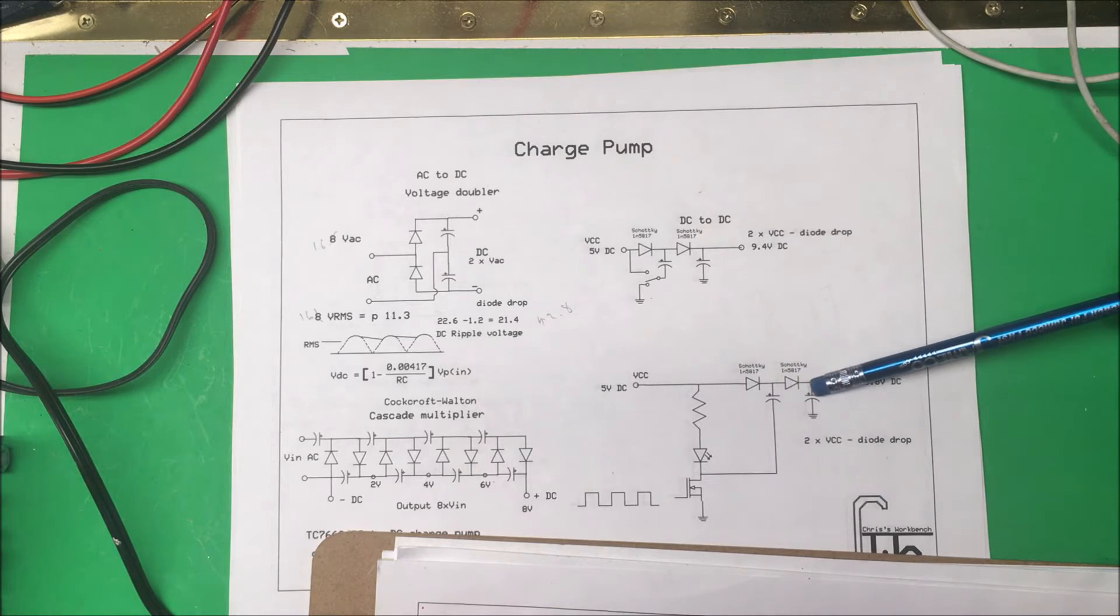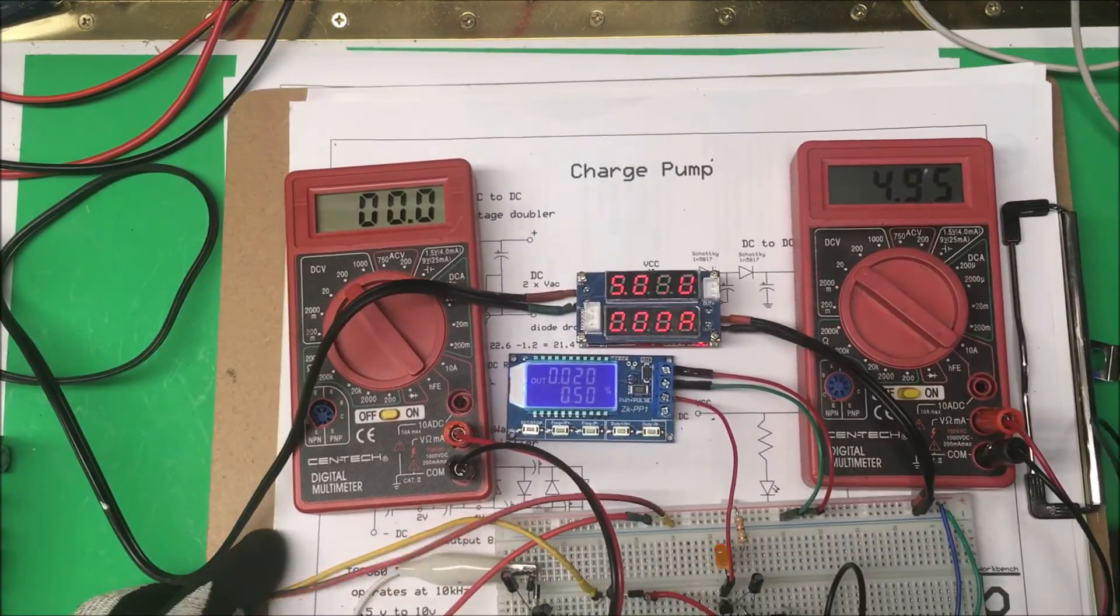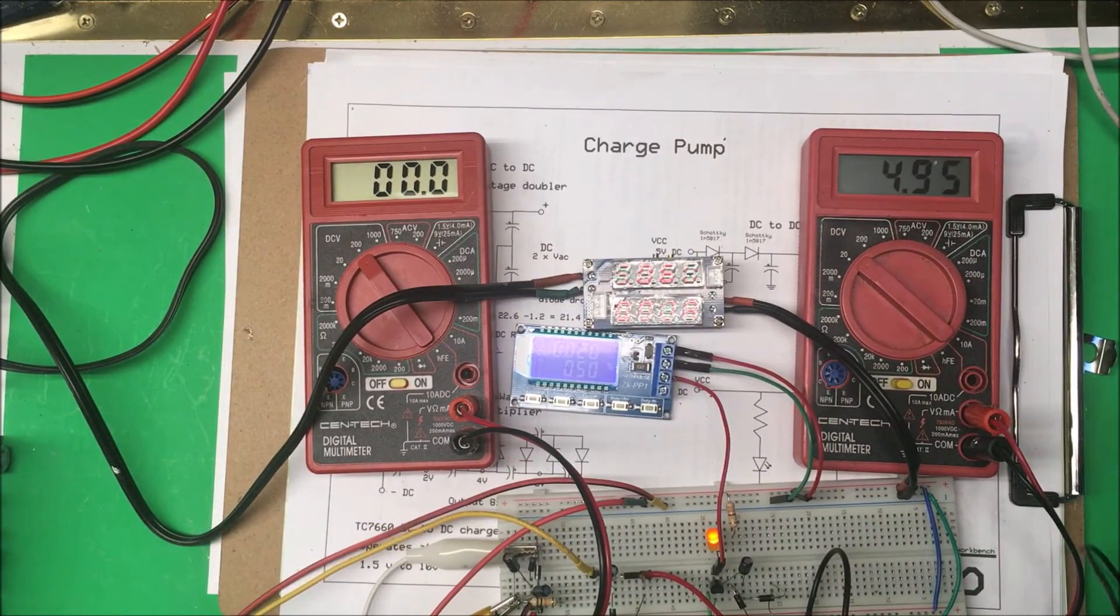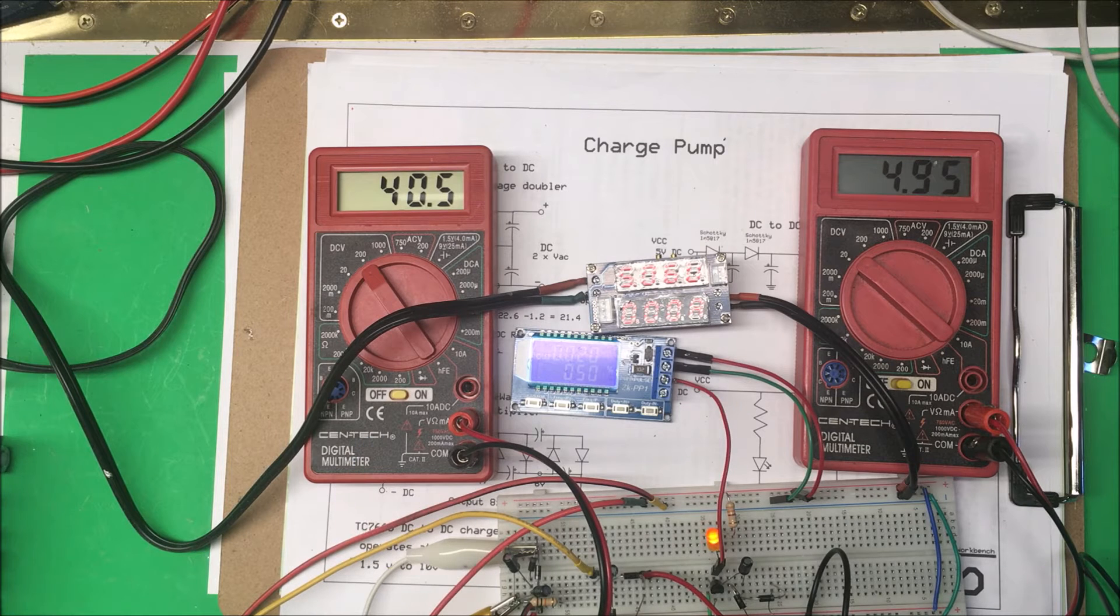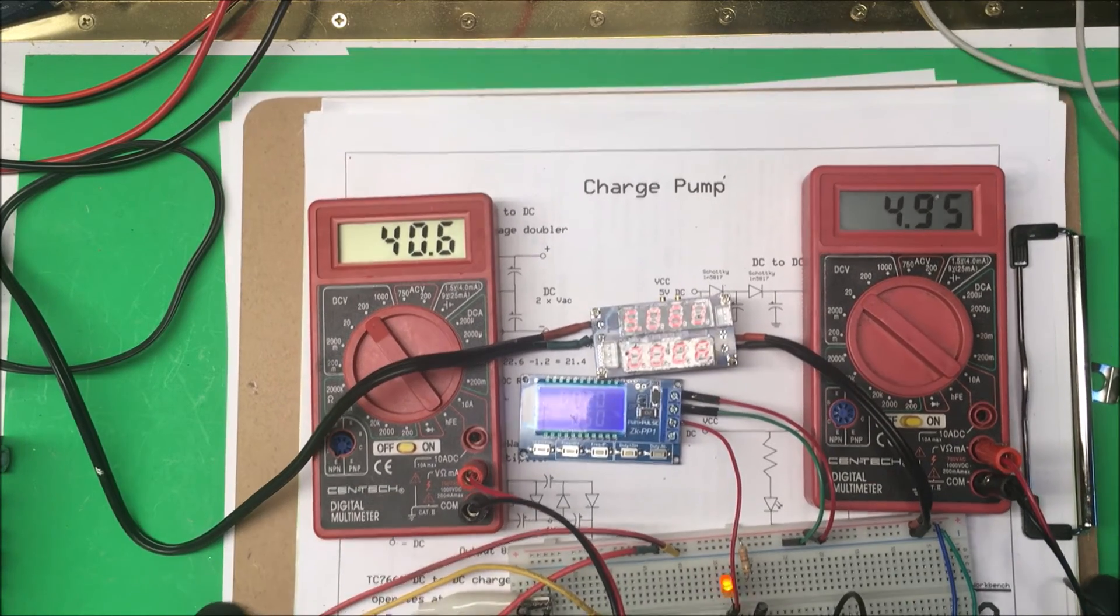Here it is. Now I've got the, let's see what our AC one or DC voltage is: 40 volts, 40.5 volts out of that one. I'm putting in 16 volts RMS value in there, so that's pretty good.